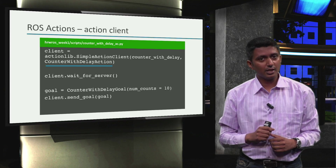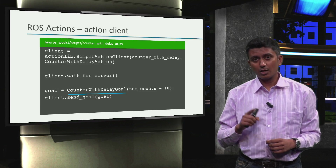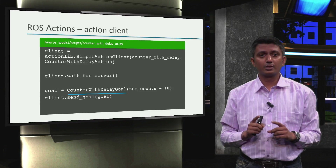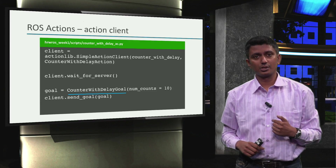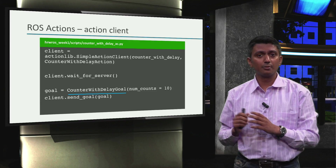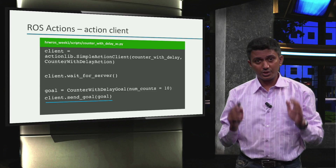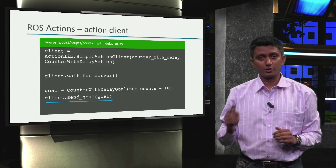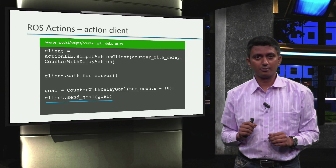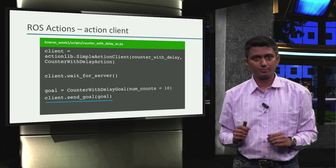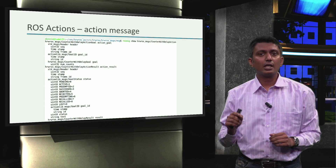This is the action type of our action client. We also notice that we use the message type counter_with_delay_goal, which does not have the word 'action' in it. That is because the action client code is something we as users develop to leverage the facilities of the actionlib ROS package. When we send the goal from our client, this goal is registered by the action server and the actionlib ROS package. The actionlib package requires additional information along with the action messages we pass to it, and that additional information is actually the content of the counter_with_delay_action message type.